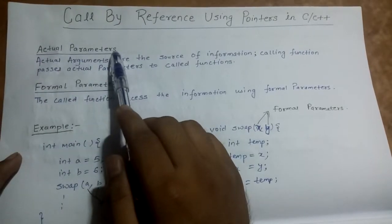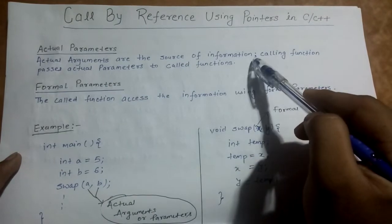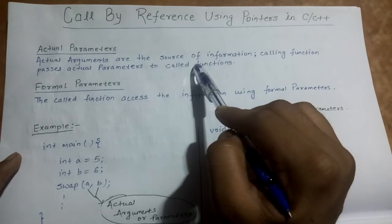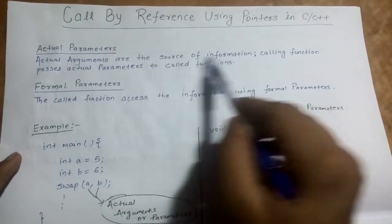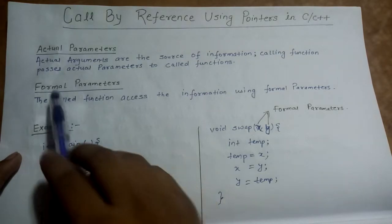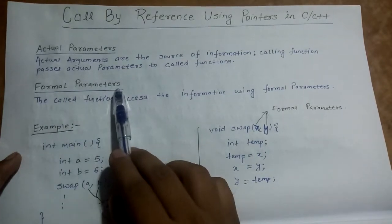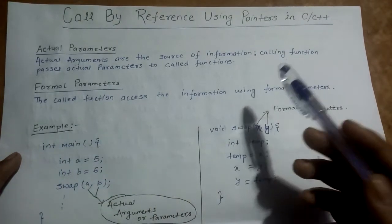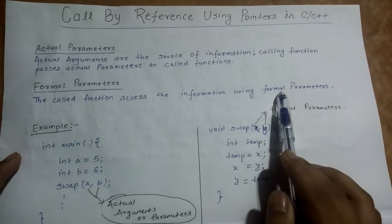Actual parameters are the source of information. The calling function passes actual parameters to the called function. The function which invokes another function inside of it is called a calling function, and the function which is invoked from the calling function is called a called function. The called function accesses the information passed by the calling function using formal parameters.